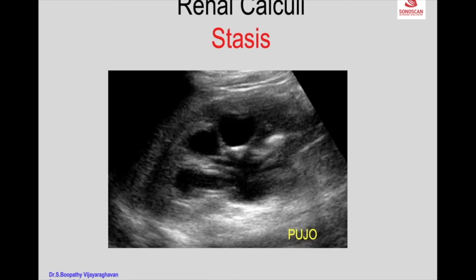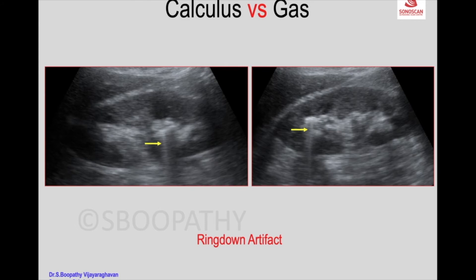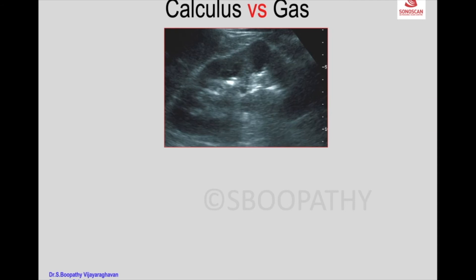The little calculi may be due to stasis. There is congenital PUJ obstruction with hydronephrosis, and there is calculus formation in the calix. With a calculus, you get the acoustic shadow — that is one of the differences. But sometimes it may not produce a shadow.